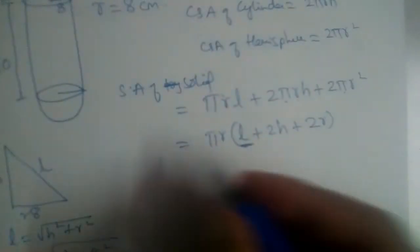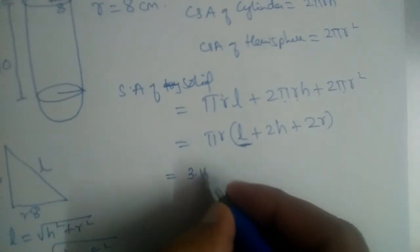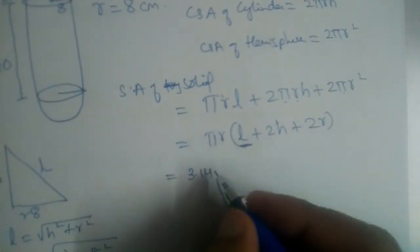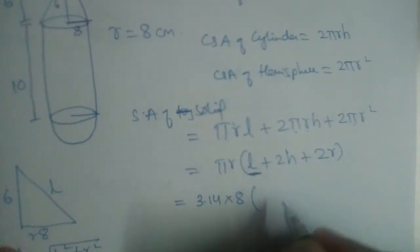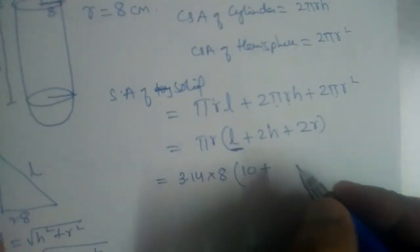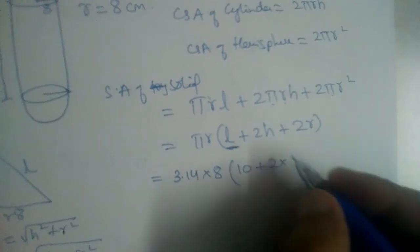Let us substitute the values here. π is 3.14, r is 8, L is 10. Just now we got it. L is equal to 10.